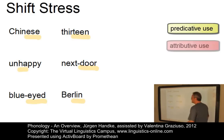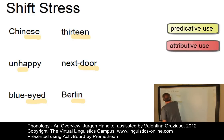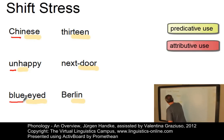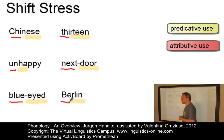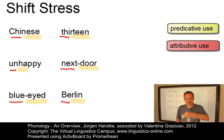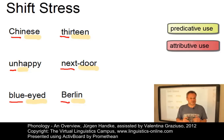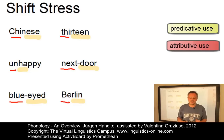This can be contrasted with an attributive context where the first syllable is stressed: 'a Chinese guide,' 'an unhappy feeling,' 'a blue-eyed girl,' 'a 13-year-old girl,' 'our next-door neighbor,' or 'the Berlin police.' So as a guideline: if these adjectival items are used attributively, you stress the first syllable; if they are used predicatively, you stress the second syllable.